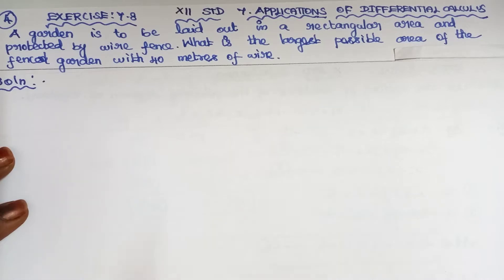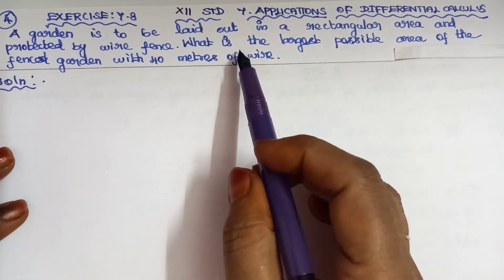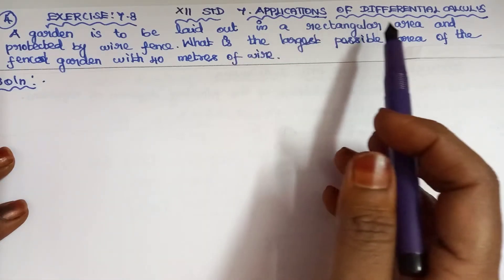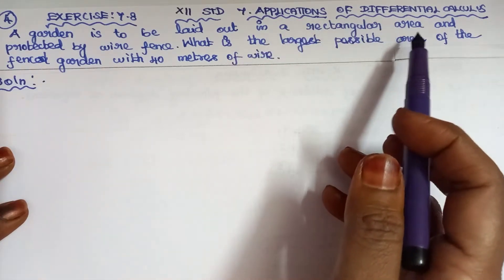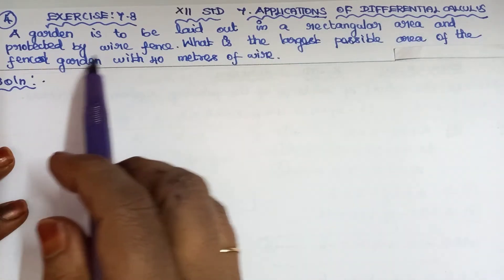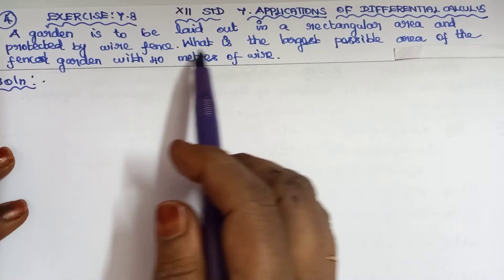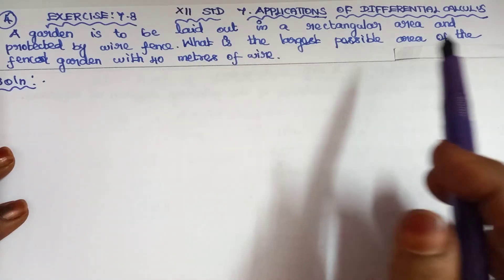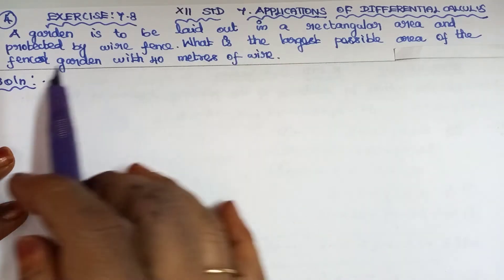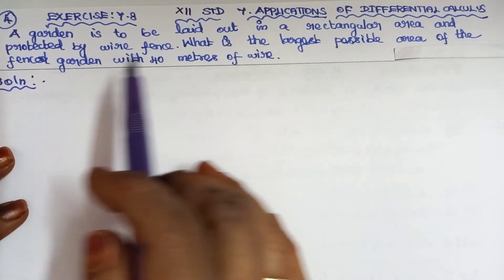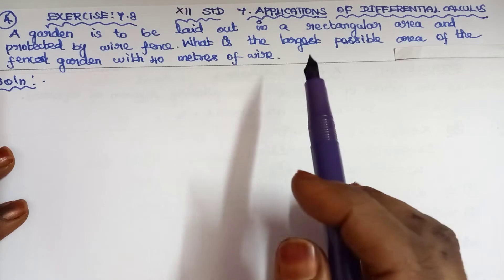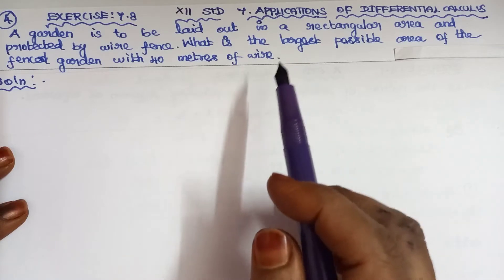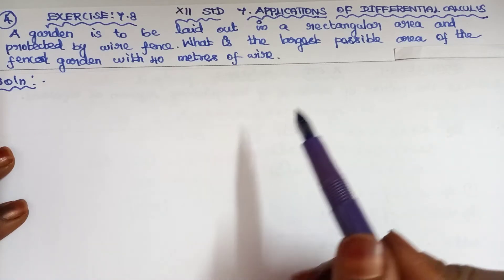A garden is to be laid out in a rectangular area and protected by wire fence. What is the largest possible area of the fenced garden with 40 meters of wire?